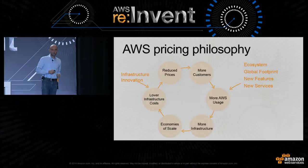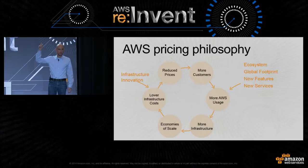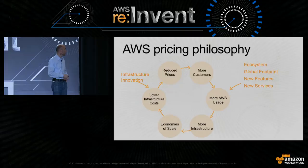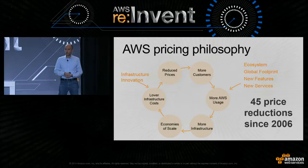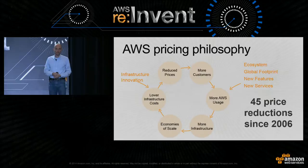This is where infrastructure innovation comes into play. If you haven't seen James Hamilton's talk, please look it up on YouTube — it covers what he does in terms of infrastructure innovation, which helps bring down infrastructure costs and prices even more. So far, we have reduced prices 45 times since AWS was born, and we will continue lowering prices for our customers, even if you don't do anything.